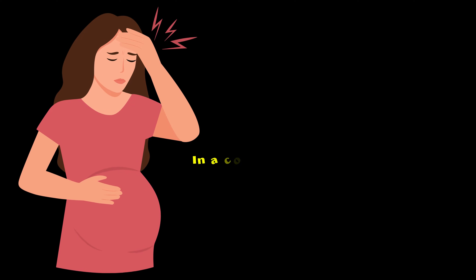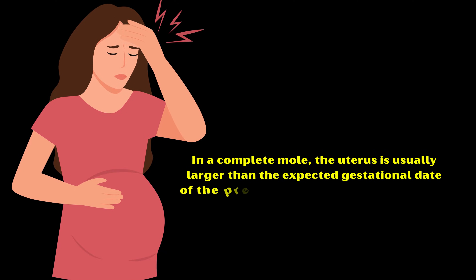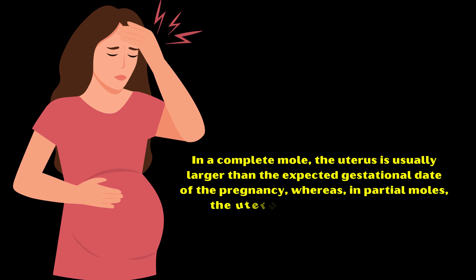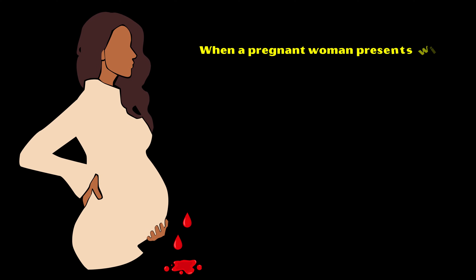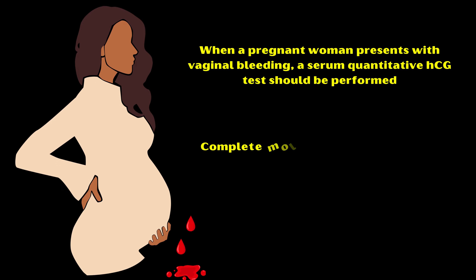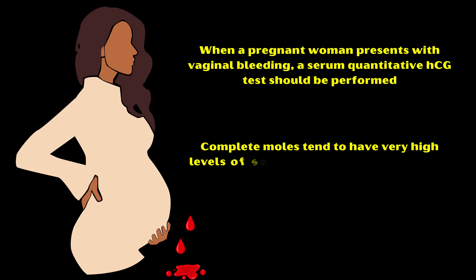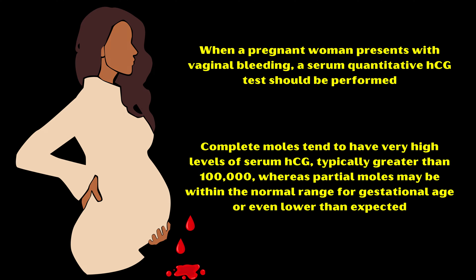In addition, in a complete mole the uterus is usually larger than the expected gestational date of pregnancy, whereas in partial moles the uterus can be smaller than the suggested date. When a pregnant woman presents with vaginal bleeding, a serum quantitative HCG test should be performed. Complete moles tend to have very high levels of serum HCG, typically greater than 100,000, whereas partial moles may be within the normal range for gestational age or even lower than expected.